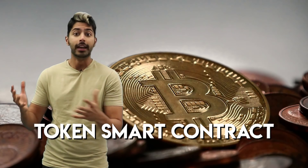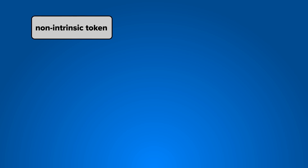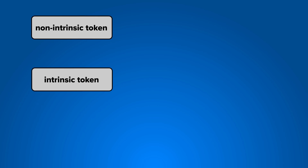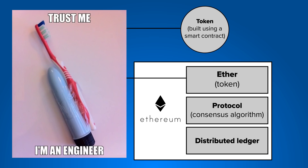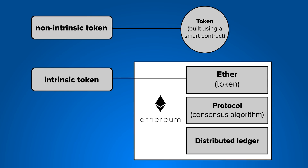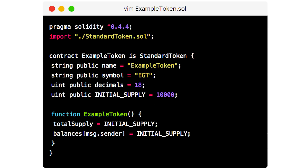One type of smart contract that's gotten really popular recently is the token smart contract. Tokens are digital assets that can represent anything from loyalty points to vouchers to IOUs to securities to actual physical objects. A token is nothing more than a smart contract running on top of the Ethereum blockchain — it's a set of functions with an associated database.